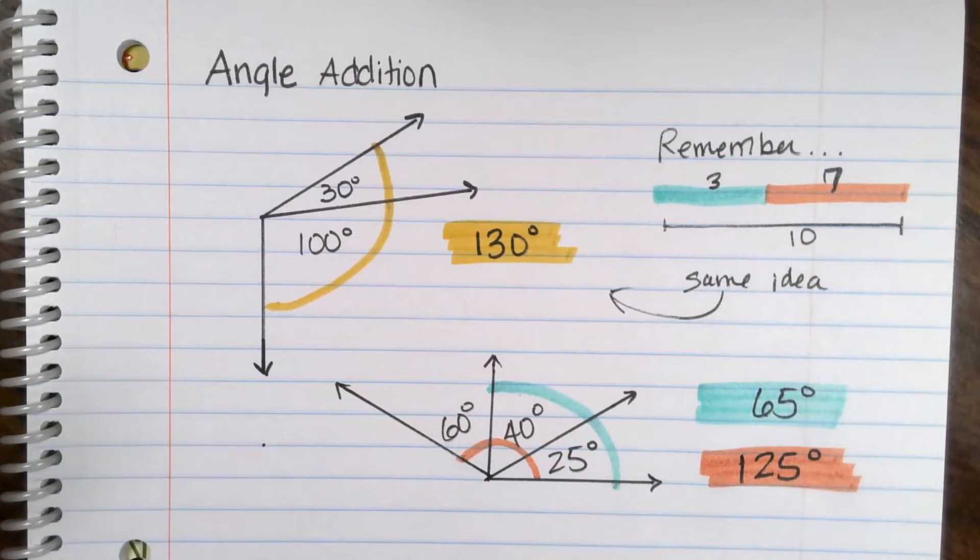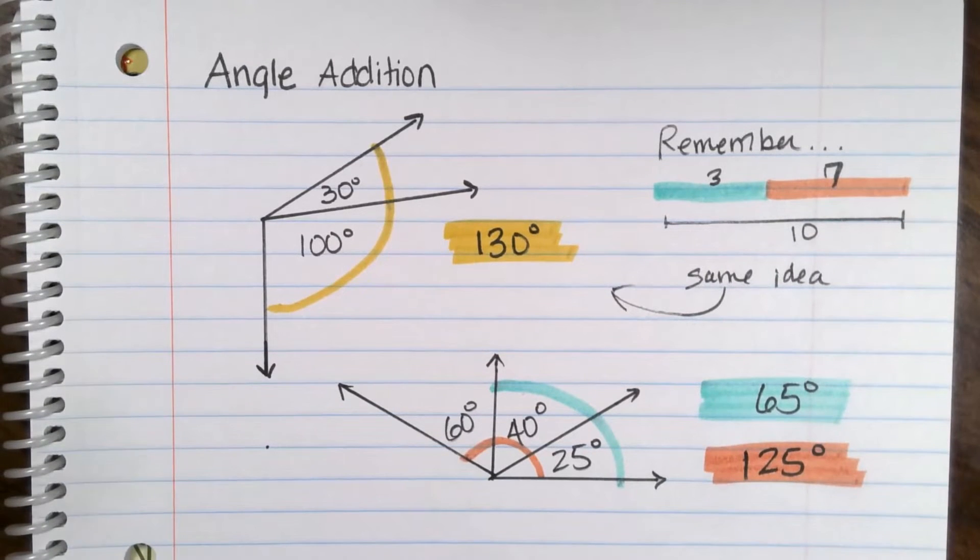60 and 40 is 100 plus 125, so this whole thing would be 125 degrees. So the idea of angle addition is actually really simple, but the problems themselves are not. So I'm going to switch over to the computer and show you. I'm going to do some examples and we're going to do some practices too with some more complicated problems.